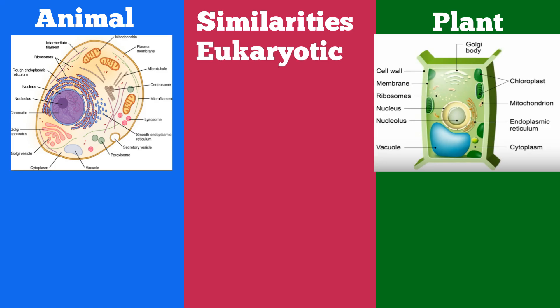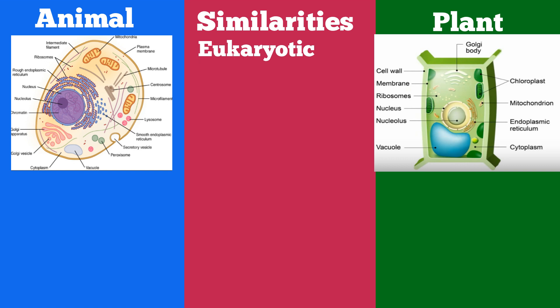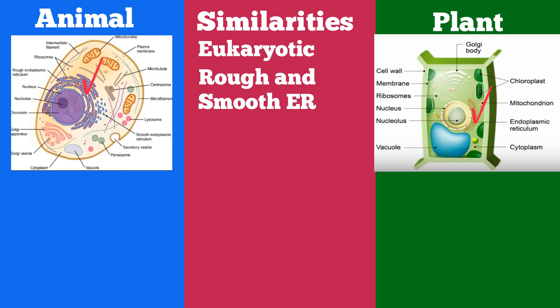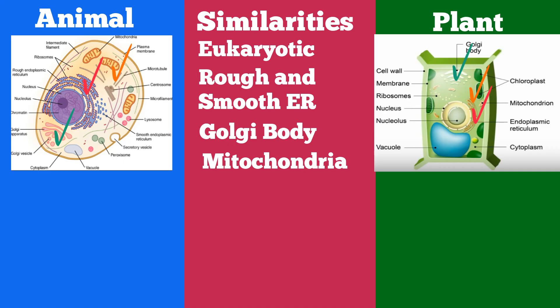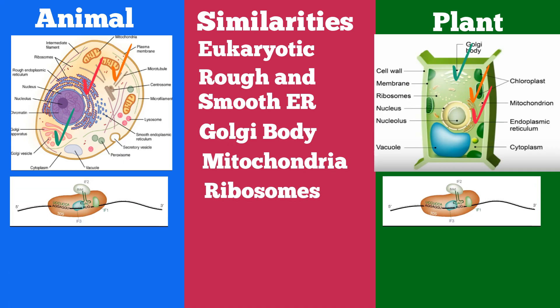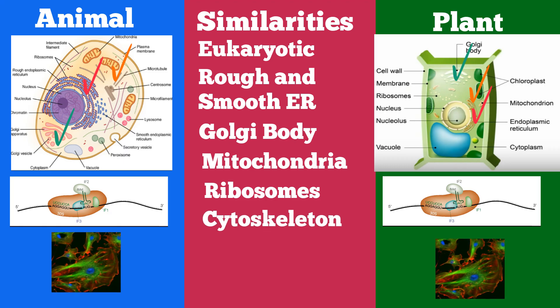They both are considered eukaryotic cells because they both contain a nucleus and membrane-bound organelles. They have many of the same organelles. They both contain a rough and smooth ER, a Golgi body, and mitochondria. They both have ribosomes which create proteins — though technically ribosomes are not organelles because they are not membrane-bound. In addition, animal and plant cells contain a cytoskeleton and cytoplasm, and they both contain a cell membrane.